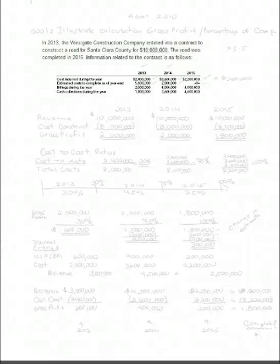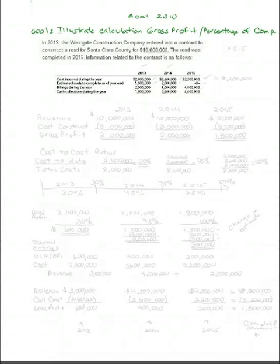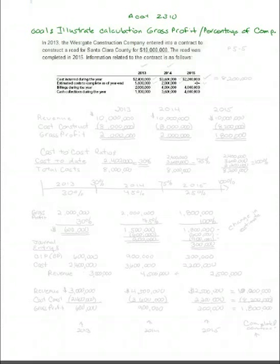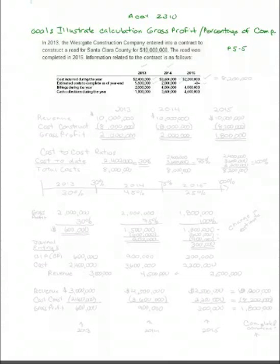Hello, and welcome to my Accounting 2310 Pencast. My goal is to illustrate for you today the calculation of gross profit using the percentage of completion method of accounting. I am going to use the information below to calculate gross profit for three years. If you are using the Spiceland 7th Edition textbook, this is Problem 5-5, Chapter 5, Problem 5. But since I have repeated the problem here, you don't need that textbook to follow along. My goal is to calculate gross profit using the percentage of completion. So let's get started.